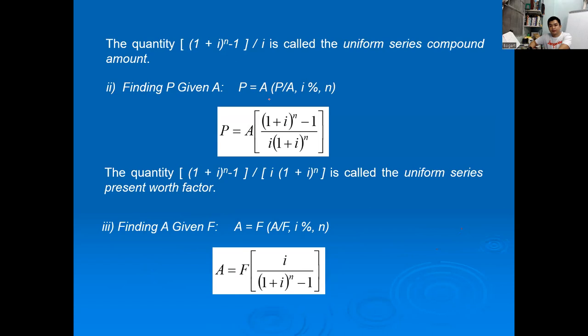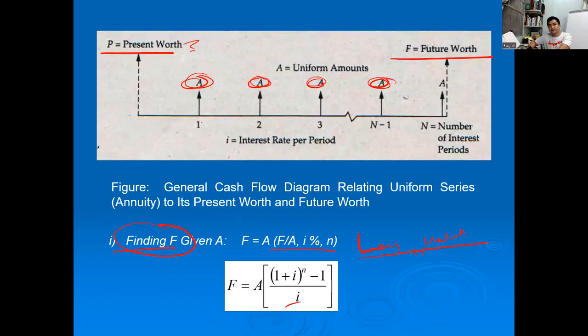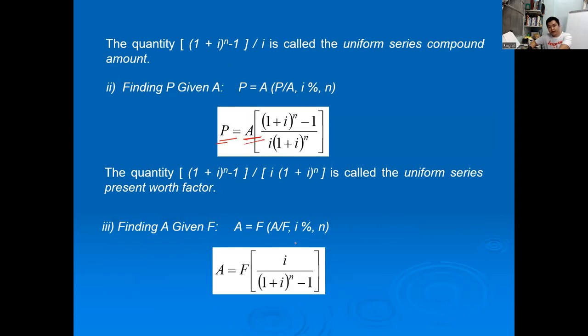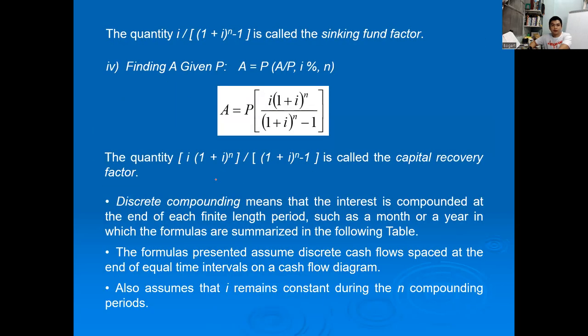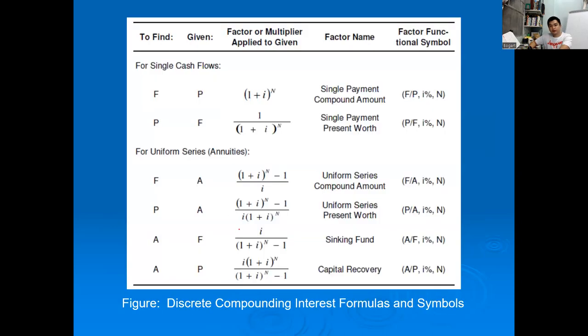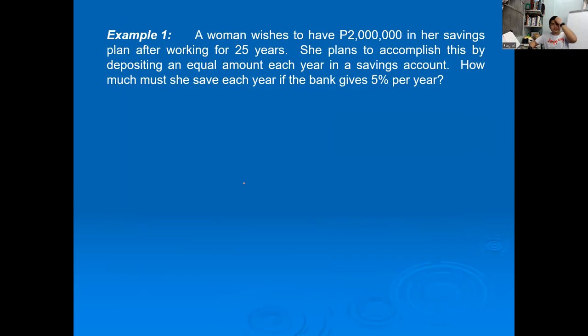Some example problems: What annual amount do you need for a desired future worth? Finding P given A: what present worth do you need to have a certain annual payment over N periods? Finding A given F: what do you need to pay yearly to have a future worth? Finding A given P works similarly. Note the notation: A given P is written as A/P.